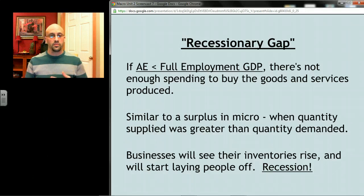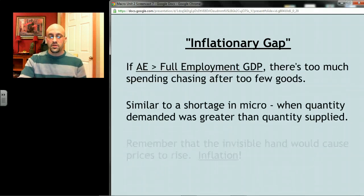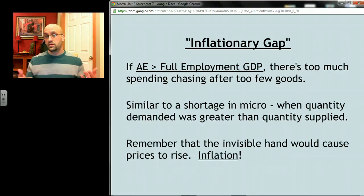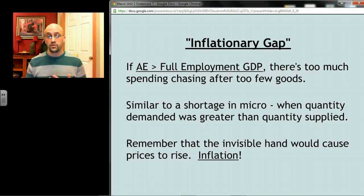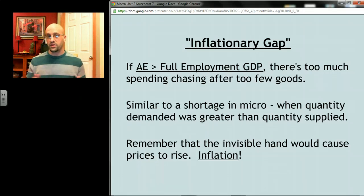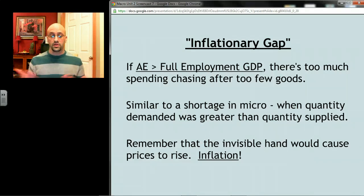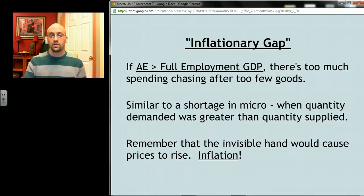We call that a recessionary gap — when spending is insufficient to purchase what could be produced at full employment. The opposite happens when spending exceeds the amount of stuff being produced. When there's too much spending chasing too few goods, it's like a shortage in microeconomics where the quantity demanded exceeds quantity supplied, and those invisible hand forces push prices up. On a nationwide scale, we call that inflation, and we call it an inflationary gap when aggregate expenditures exceed full employment GDP.